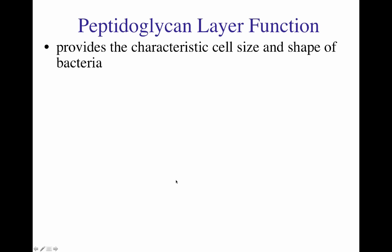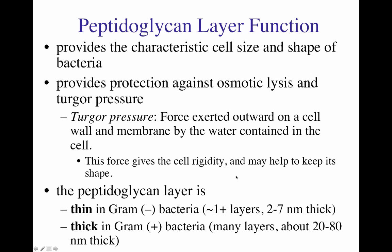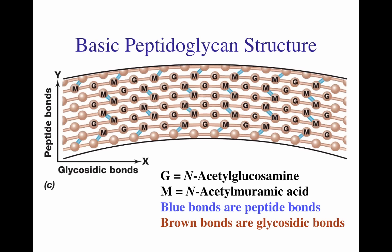The peptidoglycan layer provides the characteristic cell size and shape of bacteria. It also provides protection against osmotic lysis and turgor pressure. Turgor pressure is the force exerted outward on a cell wall and membrane by the water molecules contained inside the cell; this force gives the cell its rigidity and may help keep its shape. The peptidoglycan layer is very thin in gram-negative bacteria, sometimes between one or more layers and about two to seven nanometers in thickness, versus in gram-positive bacteria, where it is very thick — many layers between 20 to 80 nanometers.